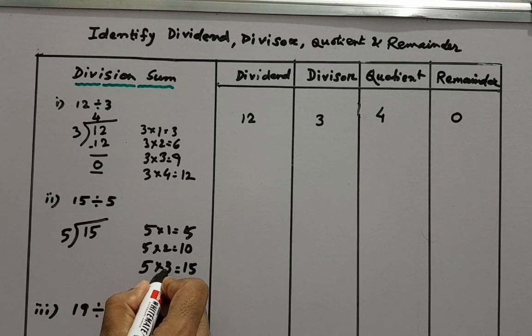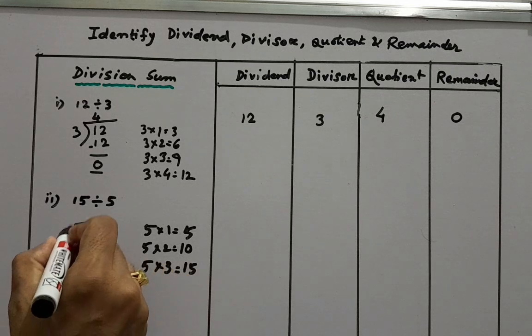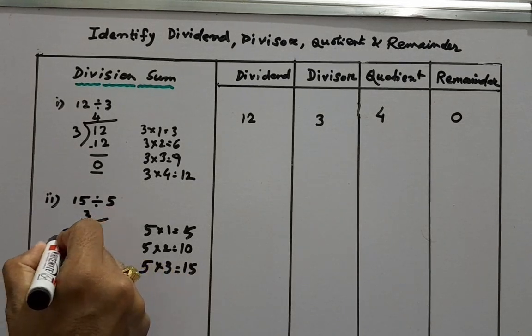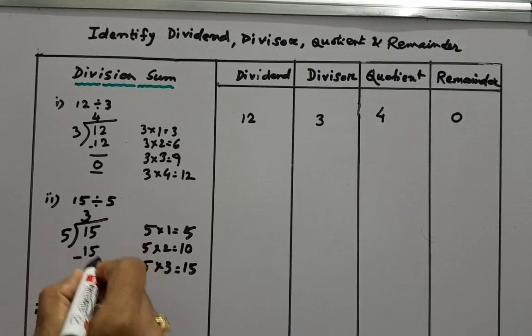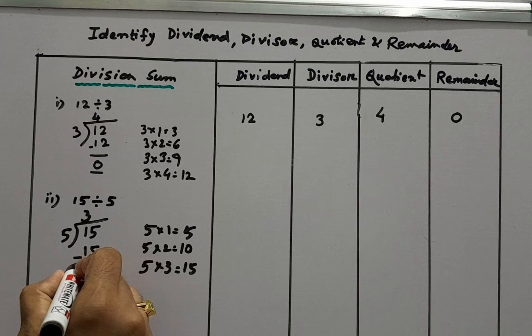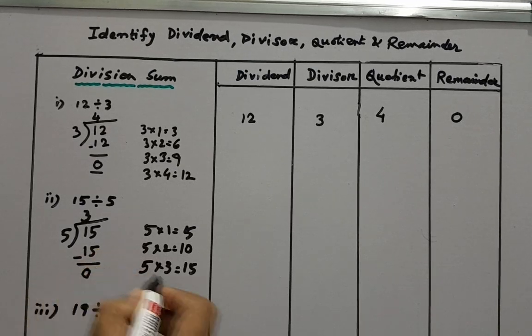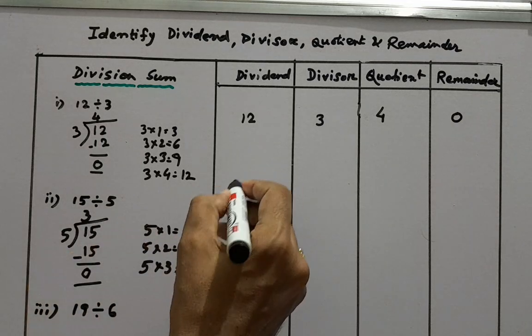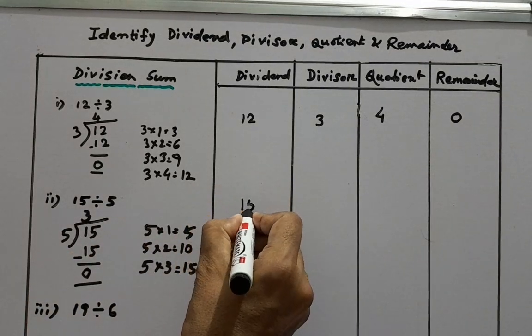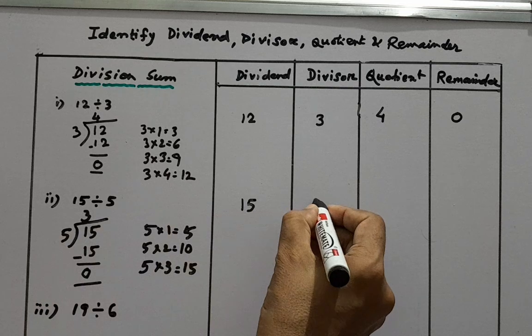So 3 times 5 is 15. Now if we deduct 15 from 15, 15 minus 15 that is 0 will be the remainder. So here dividend is 15, divisor is 5, quotient that means result is 3 and remainder is 0.